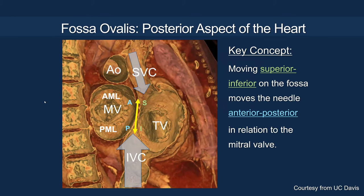From an imaging standpoint, as you go toward the SVC area with your transeptal sheath and system, you're moving more toward the anterior aspect of the mitral valve. If you're too superior — too close to the SVC — you'll likely have an anterior puncture, which may impede optimal steering to the mitral valve. A more posterior or inferior puncture leads to more coaxial deployment, typical for transcatheter mitral valve-in-valve replacement. For MitraClip, you would typically aim for the mid fossa to go posterior to the intercommissural line.